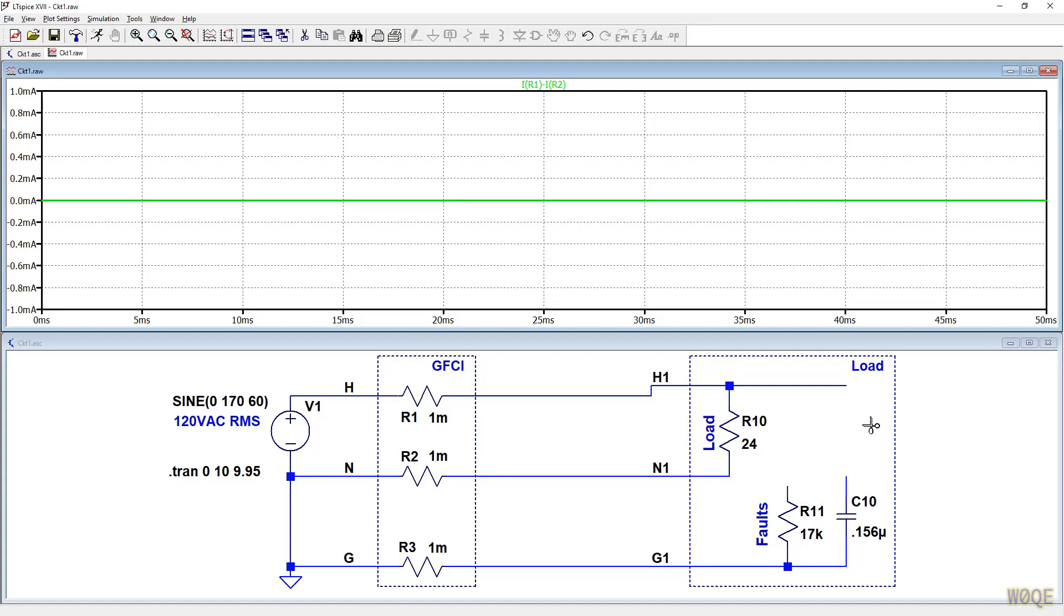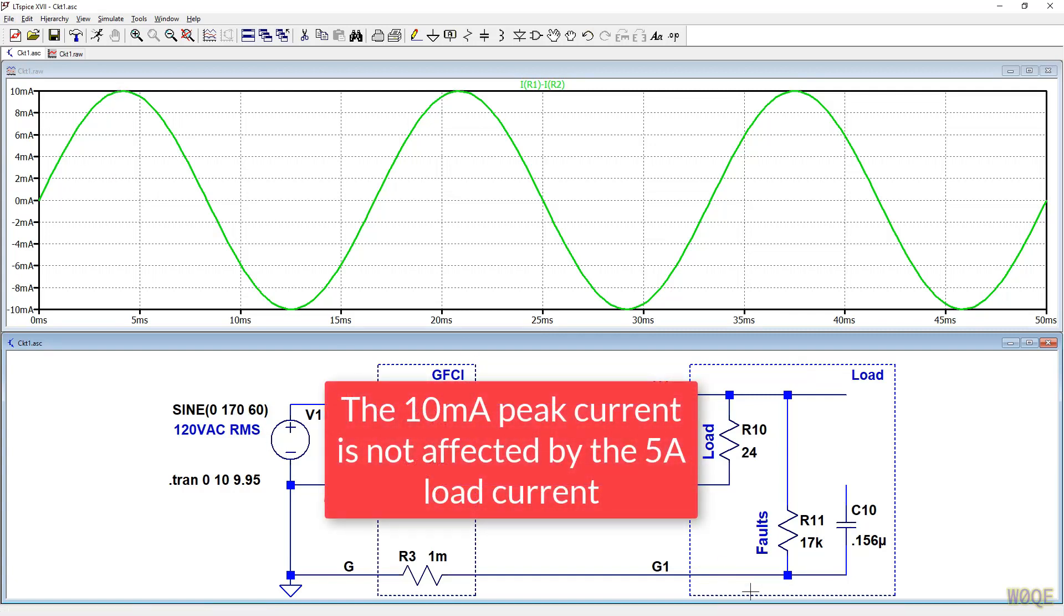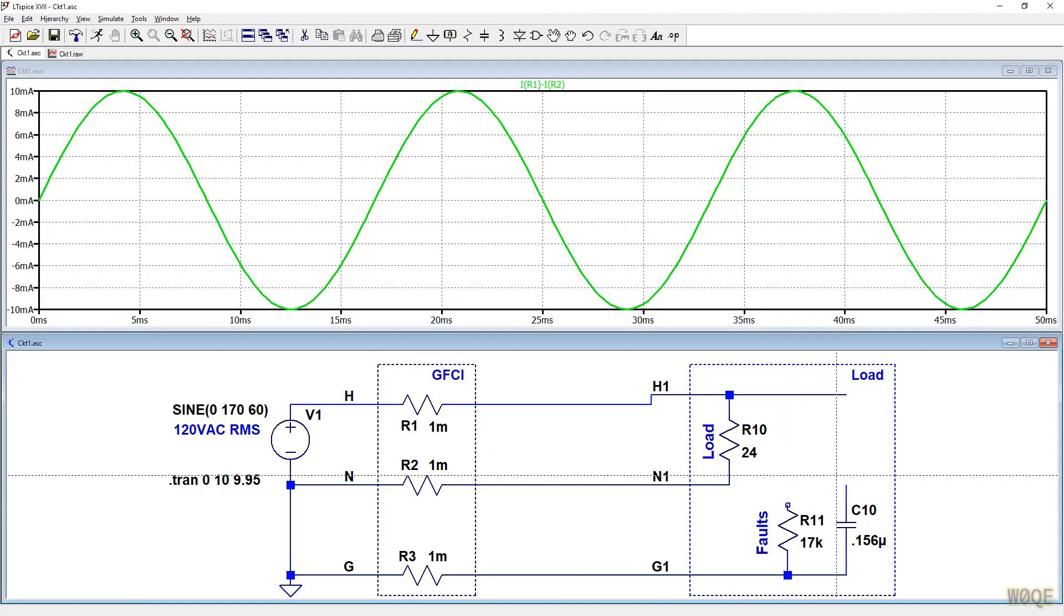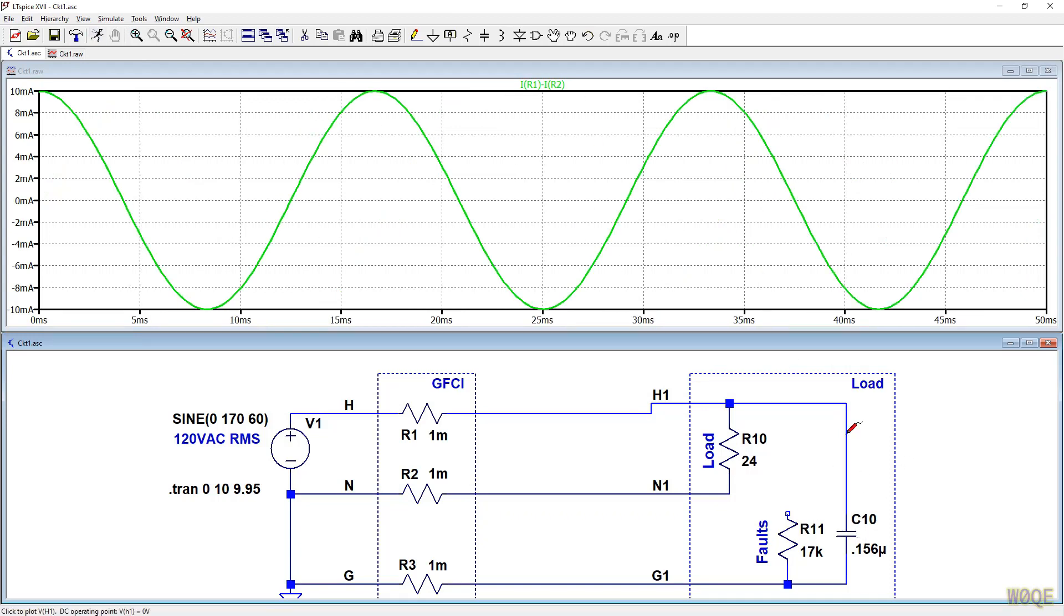Let's connect a leakage case here. Start off by connecting the 17k ohm resistor from the hot side to ground. If we connect from the neutral side to ground no current will flow here. Let's run this simulation. And what we see is that the difference in current between these two paths is 10 milliamps peak which is what we'd expect to see with a 170 volt peak circuit and 17k ohms of resistance.